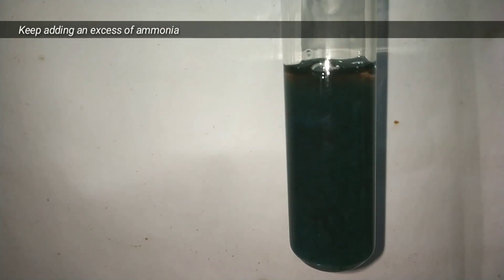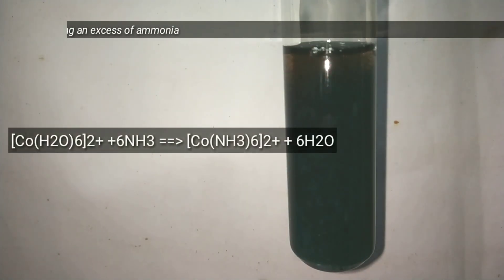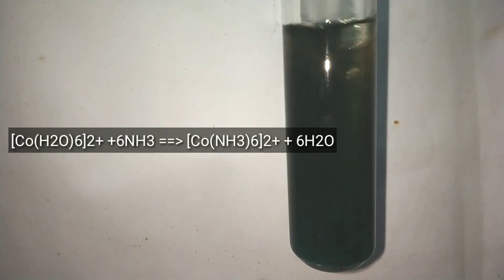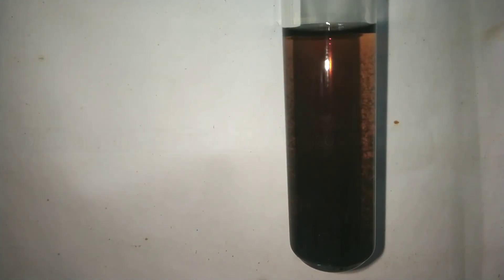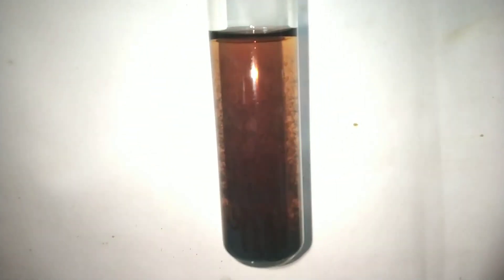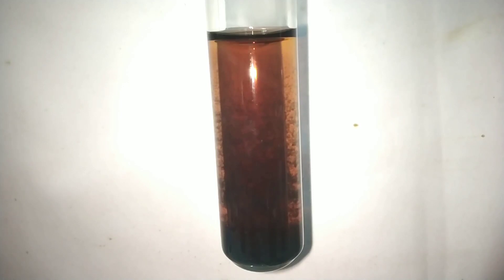Now we add an excess of ammonia solution. It forms a clear solution which is brown in color. Initially with a few milliliters of ammonia it behaved as a Bronsted base releasing and accepting protons. But now when we add an excess of ammonia it behaves as a ligand and six water molecules are substituted by ammonia molecules which gives a complex of cobalt which is surrounded by six molecules of ammonia.